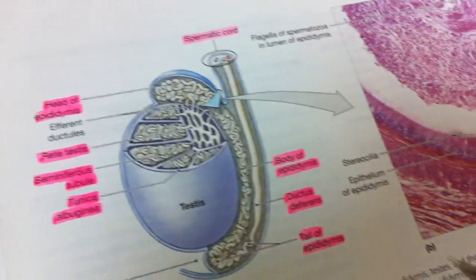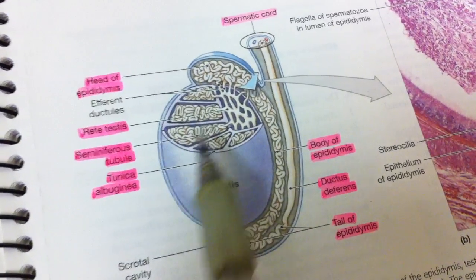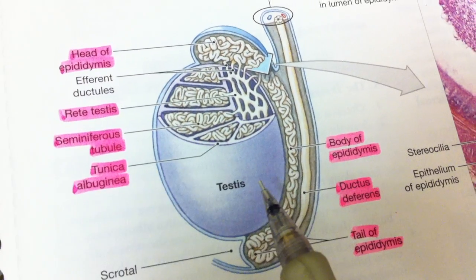Looking at a different picture of this, the tubules are right here. This whole thing that houses the tubules is called the tunica albuginea.